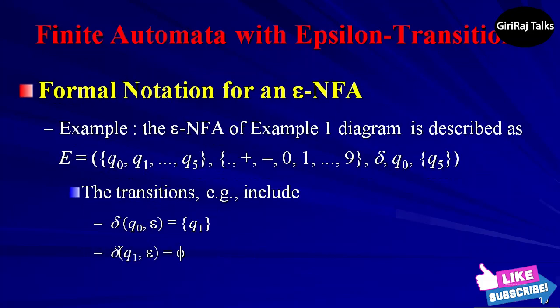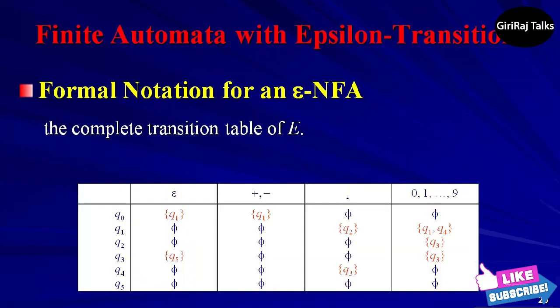Let us take one example for formal notation for an epsilon-NFA. The epsilon-NFA of Example 1 is described as E = ({Q0, Q1, ..., Q5}, {+, -, 0, 1, ..., 9}, δ, Q0, {Q5}) where δ is defined by the transition table. Observe the transition table on the screen showing what inputs are there and how every state transitions from one state to another state.